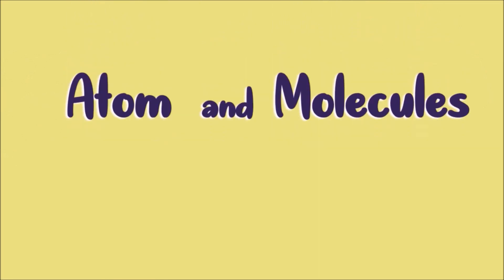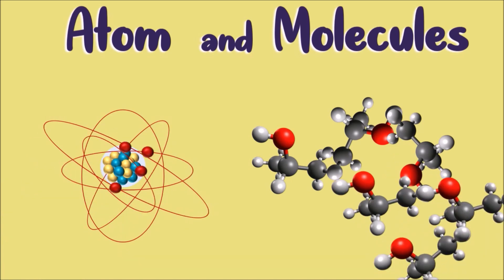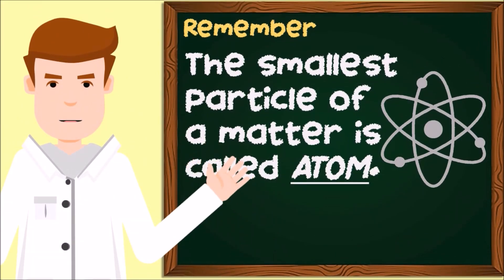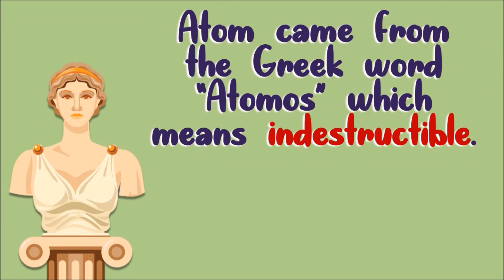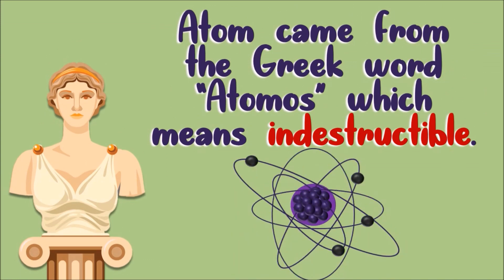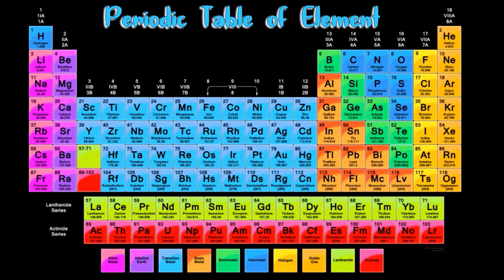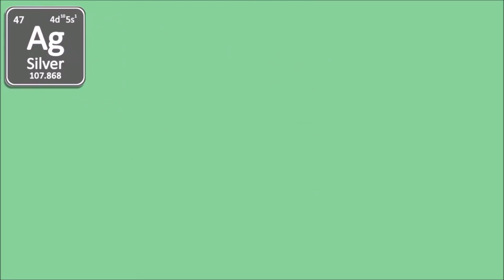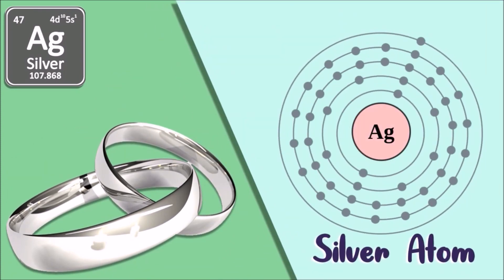Now, let's talk about the arrangement of molecules. The smallest particle of matter, which cannot be further subdivided, is called an atom. Atom came from the Greek word atomos, which means indestructible. Each element is made up of only one kind of atom. Silver is an element — it is made up of one kind of atom that cannot be further subdivided.